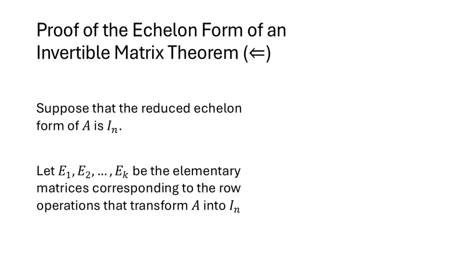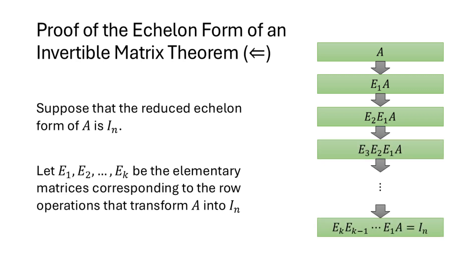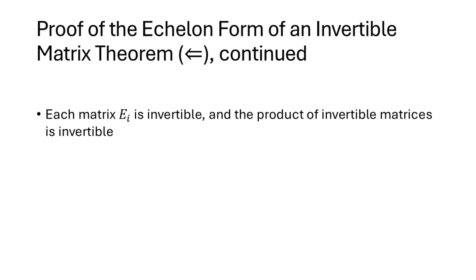Going the other direction: assuming the reduced echelon form of A is I_n, consider the row operations applied to get from A to I. For each row operation, construct the elementary matrix E_i. After the first row operation the result is E1 times A; after the second, E2 times E1 times A; and so on. Eventually, E_k times E_{k-1} times ... times E1 times A equals I_n. Each E_i is invertible, and the product of invertible matrices is invertible.